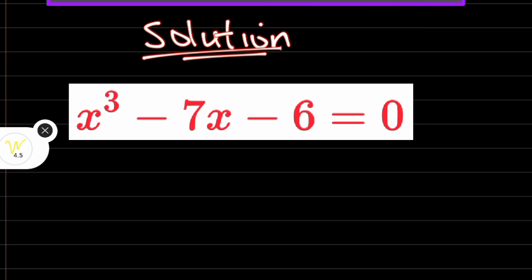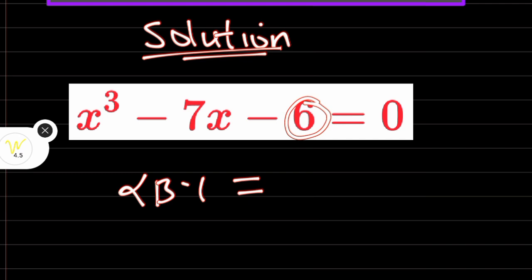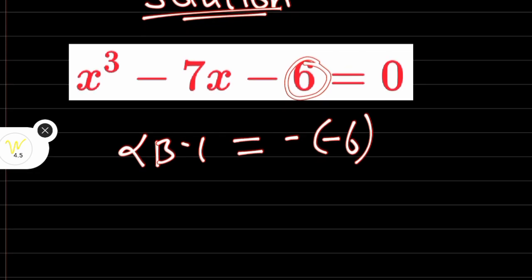Now, there is a relationship. Let's say the roots of this equation are alpha, beta, and gamma. The product of these three roots has a relationship with the constant term — they must be equal to the negative of the constant term. Negative of minus 6, which is minus 6. From that, it shows that probably one of these values, alpha, beta, and gamma, must be a factor of 6.